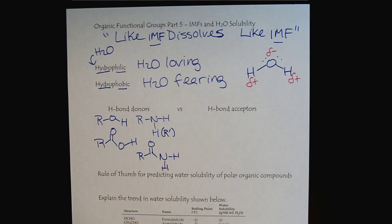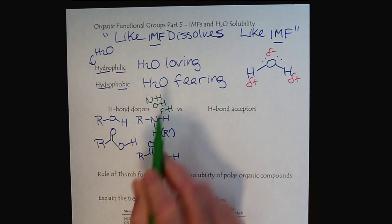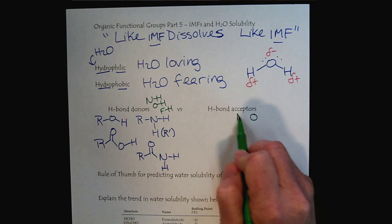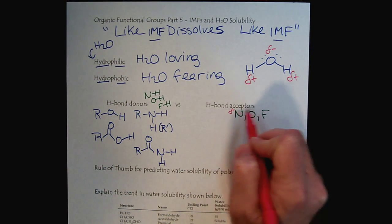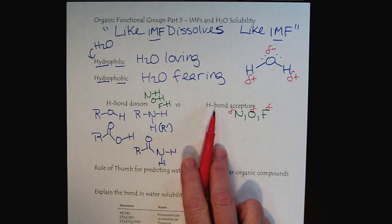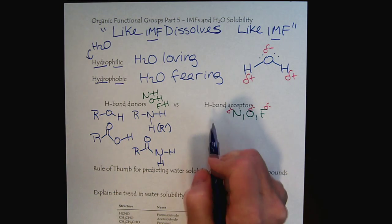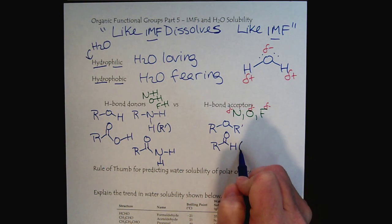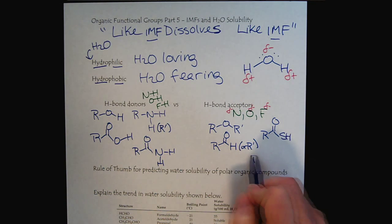When we think about H-bond donors, we think about NOF — nitrogen, oxygen, or fluorine bonded to hydrogen. The H-bond acceptors are functional groups where we're missing those bonds, but the molecules do contain nitrogen, oxygen, or fluorine. Because these are such highly electronegative elements, they carry a partial negative charge and can interact with the partial positive of an H-bond donor. This includes ethers, aldehydes, ketones, and various esters like thioesters or carboxylic esters.